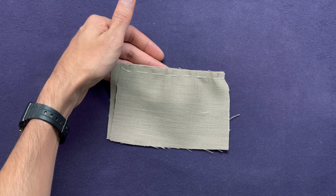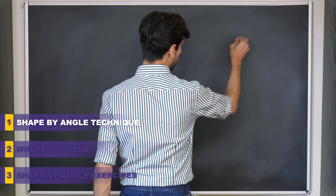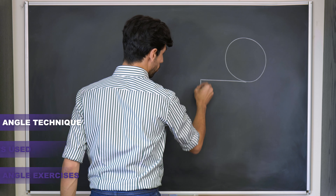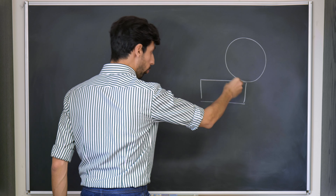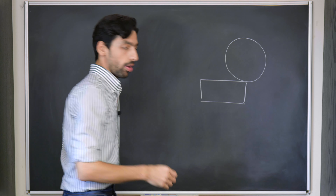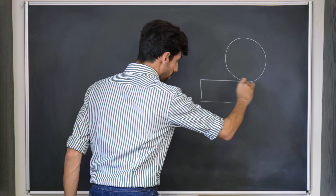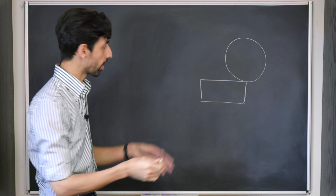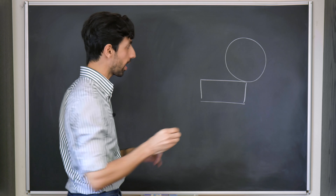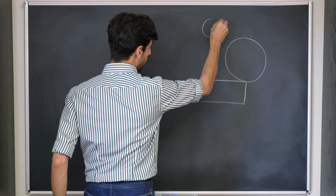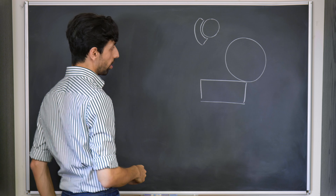Now let's have a look at shape by angle. Whenever we have two panels and those two panels don't have the same shape on the edge, but one of them is forced around the other, volume is created. The bigger the difference between the edge shapes, the more volume. The less difference, less volume. When I say they don't have the same shape on the edge, I mean that whenever you put them next to one another, they don't fit together like a puzzle.